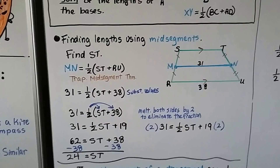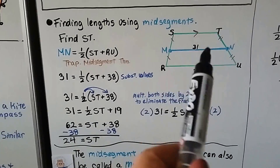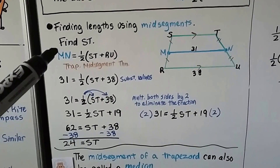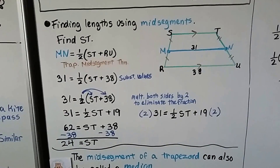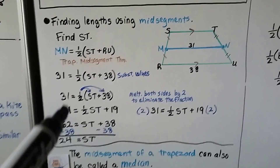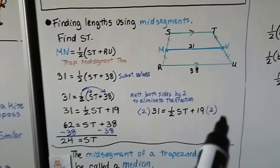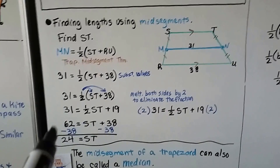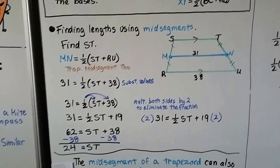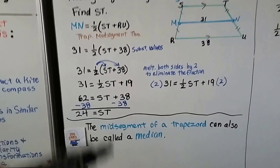Finding lengths using mid-segments: in trapezoid RSTU, mid-segment MN equals 31 and RU equals 38; find ST. By the trapezoid mid-segment theorem, MN equals one half times (ST + RU), so 31 equals one half times (ST + 38). Distributing: 31 equals one half ST plus 19. Multiplying both sides by 2: 62 equals ST plus 38. Subtracting 38: ST equals 24. The mid-segment of a trapezoid can also be called a median.